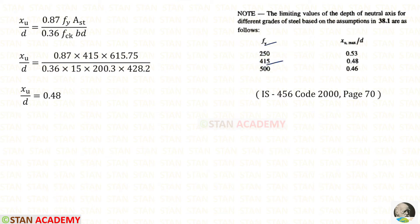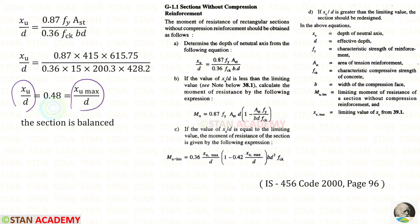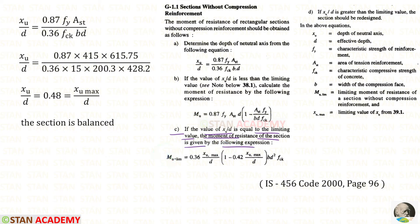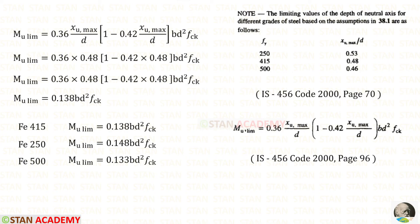With FY = 415, XU max/D = 0.48. Since XU/D equals XU max/D, the section is balanced. For condition 3 — when XU/D equals the limiting value — the moment of resistance is given by the following expression, applying XU max/D = 0.48.